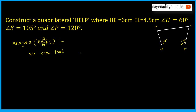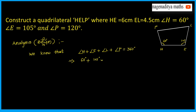We know that angle H plus angle E plus angle L plus angle P is equal to 360 degrees. This implies 60 degrees plus 105 degrees plus 120 degrees plus angle L is equal to 360 degrees.